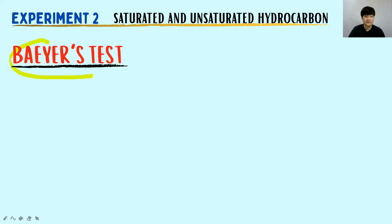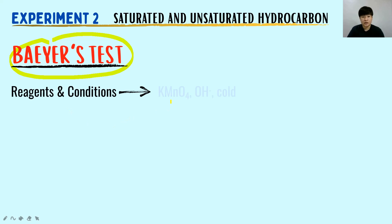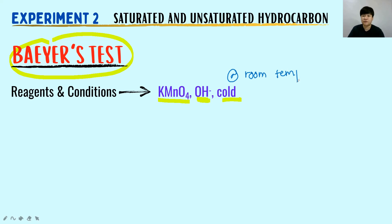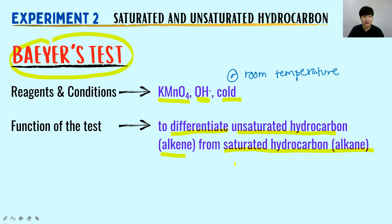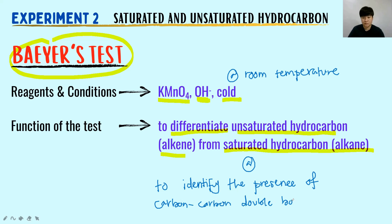Let's look at the Baeyer test. The reagent and condition is KMnO₄/OH⁻ cold — alkaline KMnO₄ in a cold condition, or at room temperature in your lab. The function of the Baeyer test is the same as the bromine test: to differentiate the unsaturated hydrocarbon alkene from the saturated hydrocarbon alkane, or to identify the presence of a carbon-carbon double bond. Both sentences are acceptable.